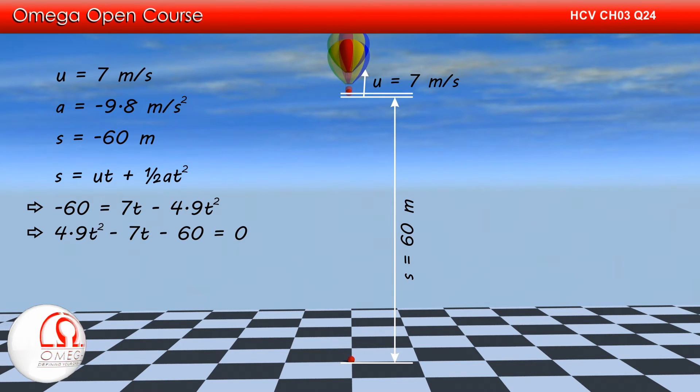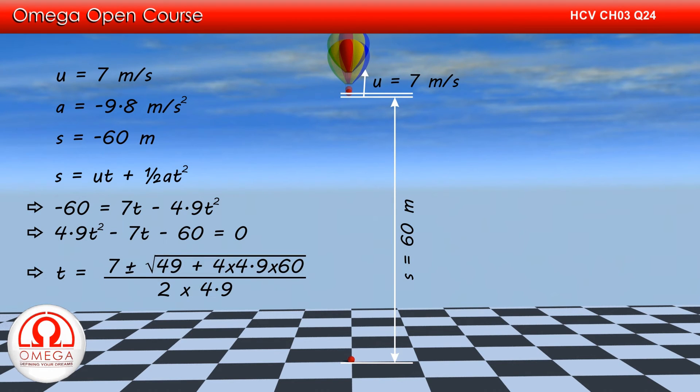Rearranging, we get 4.9t squared minus 7t minus 60 equals zero. Solving this quadratic equation using Sridharacharya rule, we get t equals 7 plus minus root under 49 plus 4 times 4.9 times 60 divided by 2 times 4.9.